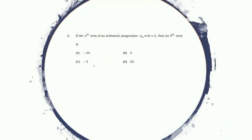Nth term of an arithmetic progression an is equal to 3n minus 2. Then ninth term is, options are here.